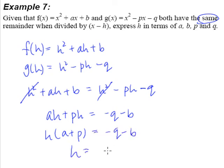So h will then become (-q - b) divided by (a + p). So this is how we manage to make h the subject, make h in terms of p, q, a, and b.